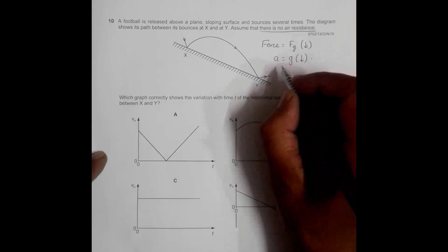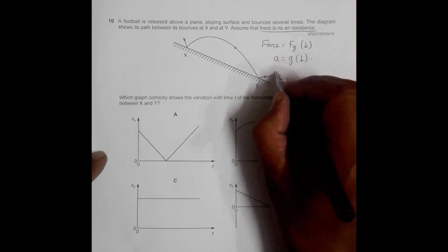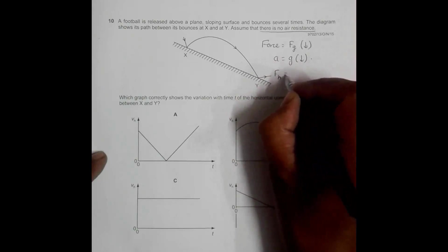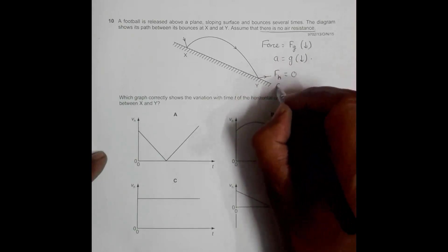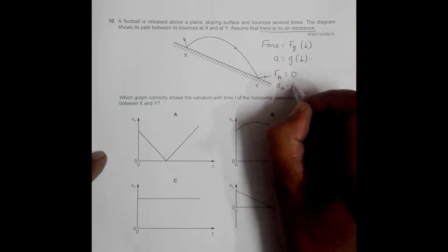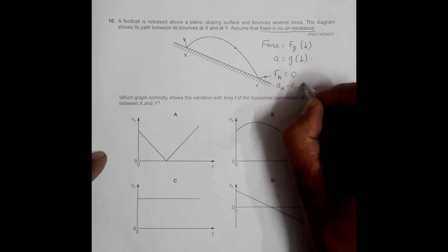So it means that the horizontal force on the body is zero, which means the horizontal acceleration itself is zero. And it means that the horizontal velocity should be equal to constant.